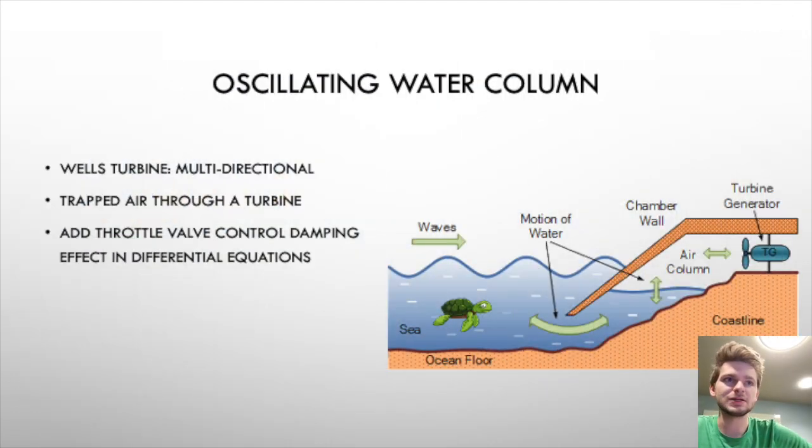Next, we're going to talk about oscillating water columns. This one is very interesting—it uses a chamber that is relatively sealed from the outside, and there is a turbine generator. Based upon how the waves flow, you can see in this diagram, it'll change how the air interacts with the turbine. As the waves come in, the air flows past the turbine, and then as the waves come down, the air flows the other direction. A lot of these oscillating water columns will have a special kind of turbine—one example is called the Wells turbine, where it is multi-directional, meaning that it can still generate electricity and will still spin in the same direction.